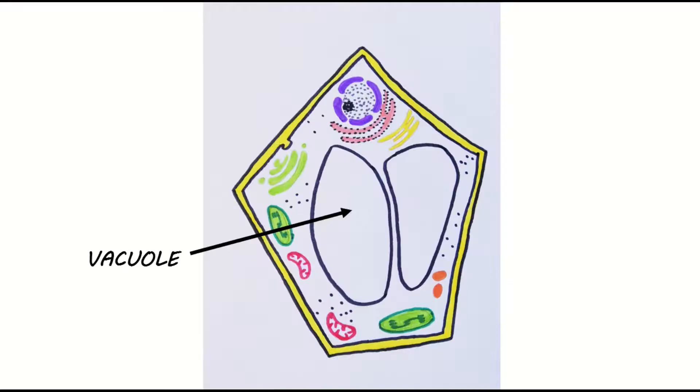Finally plant cells contain one or two large permanent vacuoles. These are membrane-bound sacs that contain a sugary solution called cell sap. They help to maintain the pressure inside the cell so that the plant doesn't wilt. Harmful chemicals can also be isolated inside the vacuole so that they don't damage the rest of the cell.